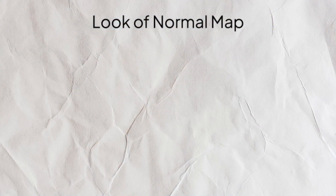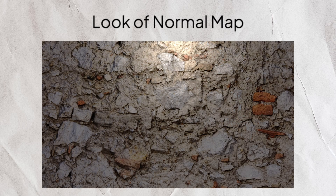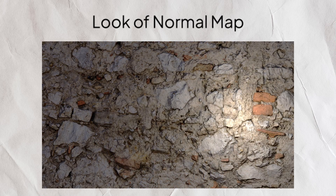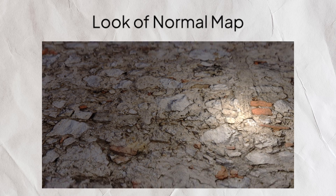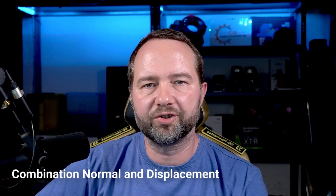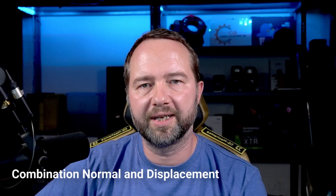And here's the biggest difference to displacement maps: the normal map does not change the geometry, but only affects how light behaves when it hits the surface. Now you might say one changes the geometry and one changes the light behavior — sounds completely fine. But no, that's not quite the case.